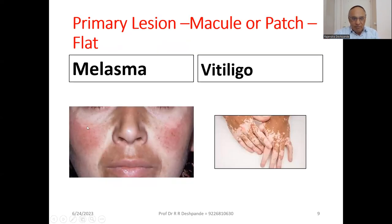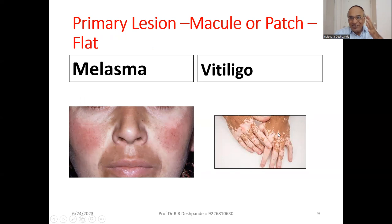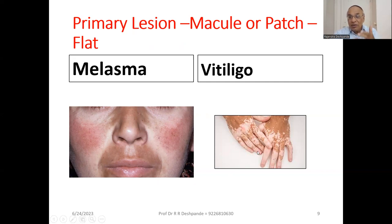Here you can see melasma — can you see the butterfly appearance? This is flat at the level of the skin. Then this is vitiligo — it is a deficiency of melanin. It is not actually a disease, it is not contagious, and there are a lot of misunderstandings. I have separate videos on vitiligo. In modern science, the most important treatment is PUVA therapy — psoralen and ultraviolet rays. Psoralen is a tablet. Ayurveda also uses bakuchi, which contains psoralen. Here you can see port wine stain, which is an example of erythema — red-colored but flat lesions.